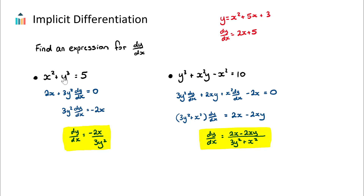We need to multiply the derivative of the outside, 3y², by the derivative of the inside — which is y — so the derivative of y³ with respect to x is 3y² multiplied by dy/dx. This is the key part. On the right-hand side, the derivative of the constant 5 with respect to x is just 0. Now that we have this, we can see our dy/dx term, and we just need to use algebra to rearrange — taking 2x from both sides and dividing by 3y².